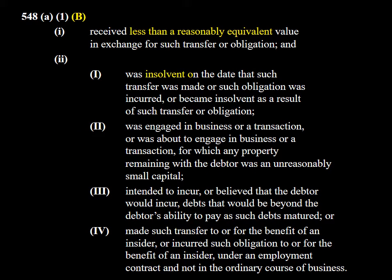548A1B is called constructive fraudulent conveyance — the other part of the statute is actual fraudulent conveyance. Constructive fraudulent conveyance requires that the debtor receive less than reasonably equivalent value. The most common issue is that the debtor wasn't solvent — because if the debtor was solvent, the bankruptcy estate could pay everybody. There's only a problem when the pie is not big enough to cut everybody an equal slice. That's why insolvency is usually a major issue — otherwise there's no need for a trustee to protect anybody.